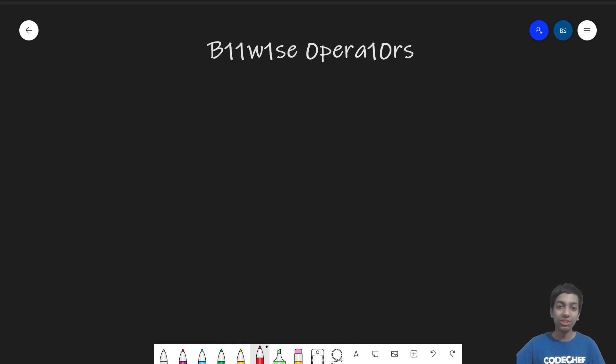Great. So bitwise operators are simply operators that work bitwise. Okay. So when I write 5 plus 5 or 5 plus 7, we all must be knowing that these two numbers are in decimal form and they are the operands.